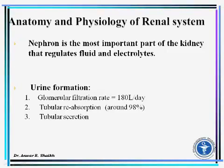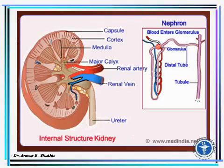The anatomy and physiology of the renal system: the nephron is the most important part of the kidney that regulates fluid and electrolytes. Urine formation includes glomerular filtration rate of 180 liters per day, tubular reabsorption of around 98 percent, and tubular secretion.